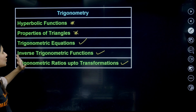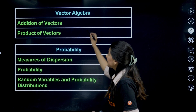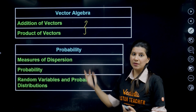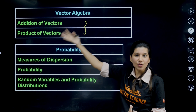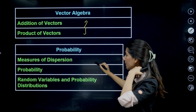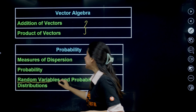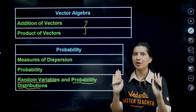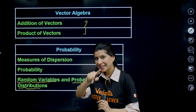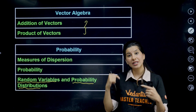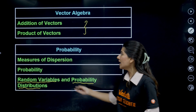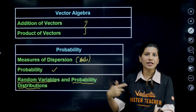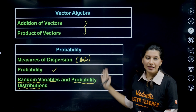From vectors, the syllabus covers addition and product of vectors — dot product, cross product, scalar triple product, and vector triple product — which are the same as in JEE Main. For probability, this is a deleted topic from JEE Main but is present in EAPCT. Random variables and probability distributions are asked very frequently in EAPCT. Statistics — measures of dispersion, variance, and standard deviation — you have already studied in JEE Main.